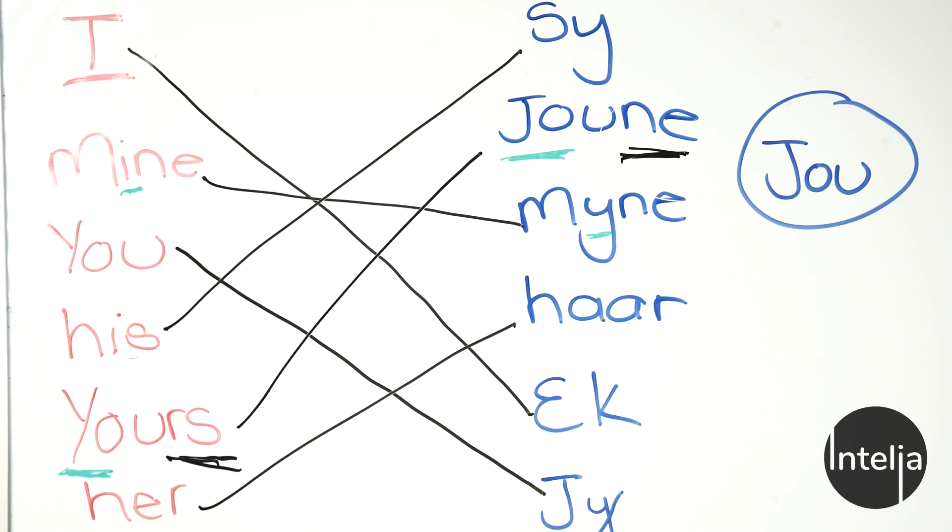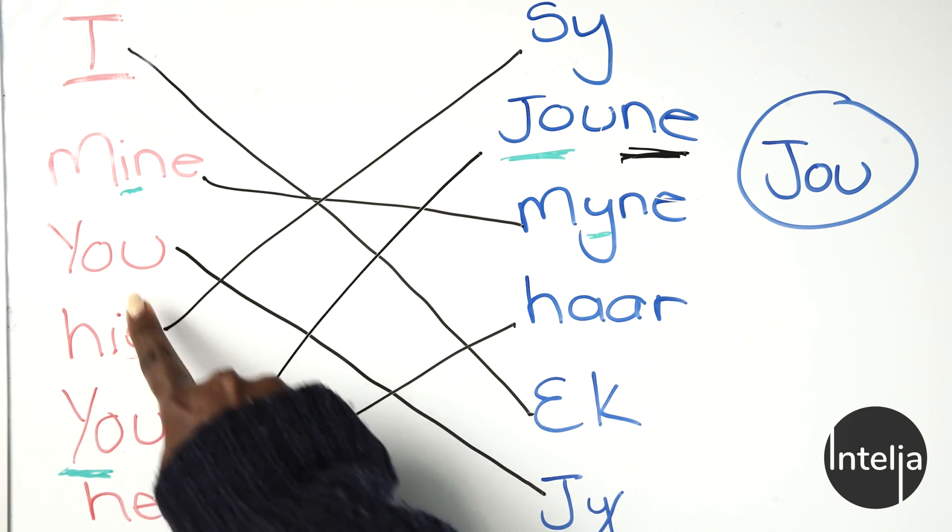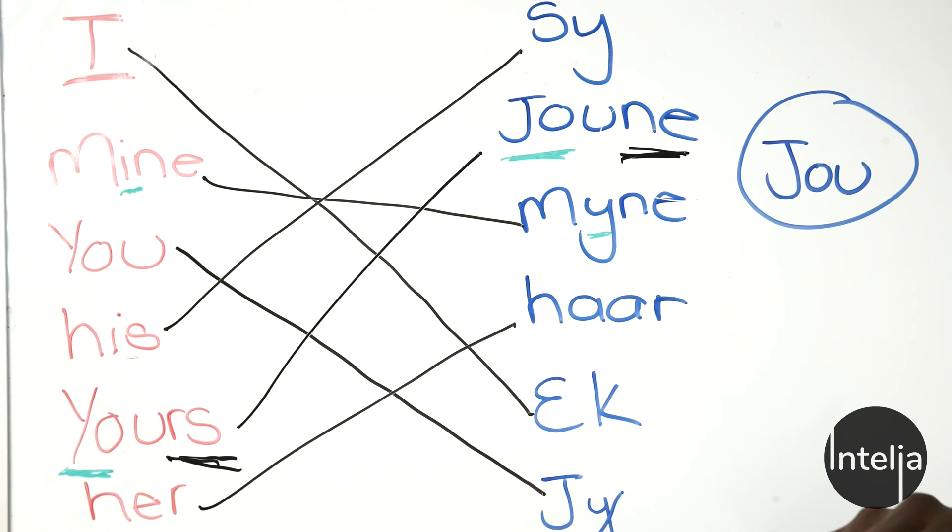You have a book. You have a book. The book is jou book. It is your book. The book is joune. The book is yours. Awesome guys, thank you so much for joining me on this exercise with fournaam woorden. See you again next time. Bye.